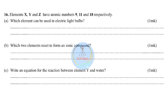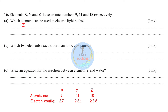Question sixteen: elements X, Y, and Z have atomic numbers 9, 11, and 18 respectively. Electron configurations: X = 2,7 (fluorine); Y = 2,8,1 (sodium); Z = 2,8,8 (argon). Which element can be used in electric light bulbs? That is Z — argon, a noble gas.